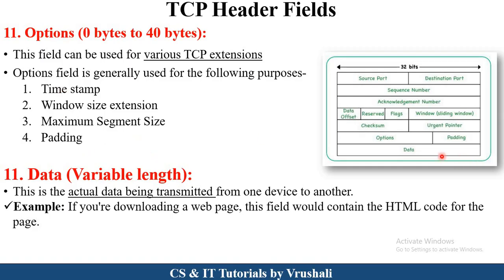The last field is the data field. The length of the data field is variable. Data means the actual information being transmitted — the sender sends a particular information to the receiver. For example, if you download a web page, the HTML code for that page is the actual data. When you send an email to another person, that email is the actual information. So this is called the data field.